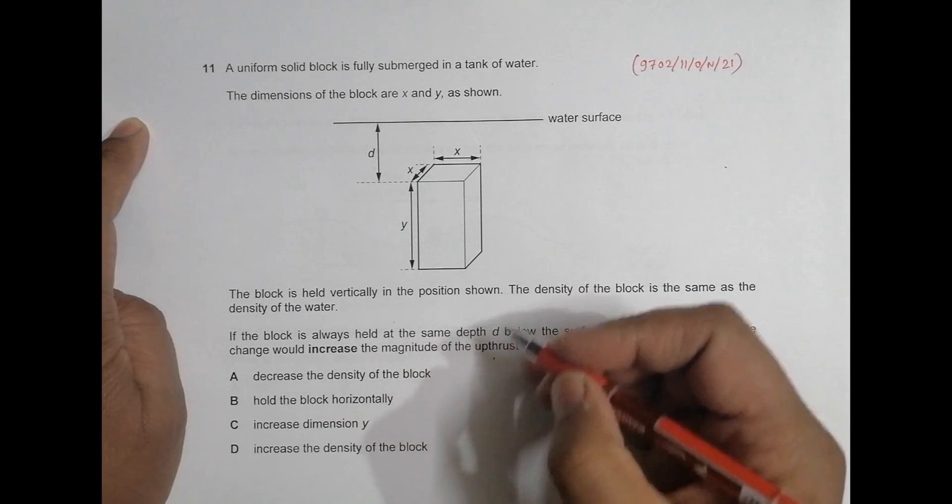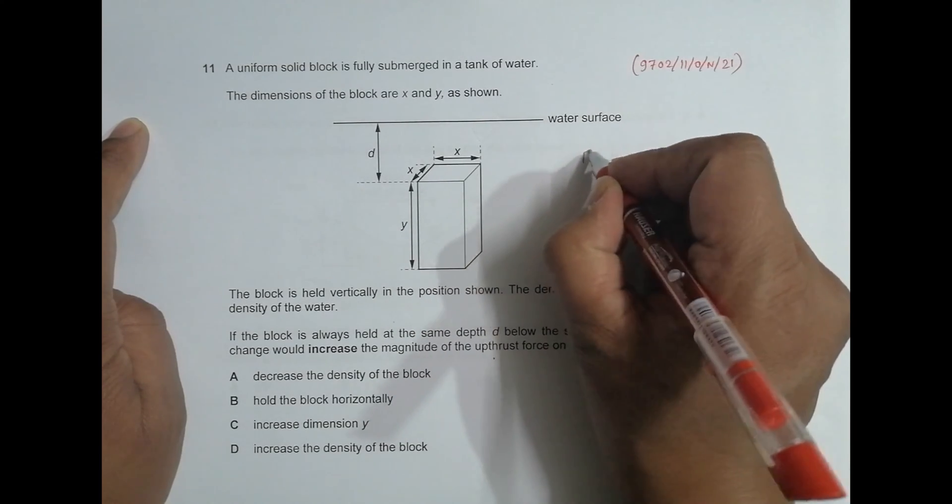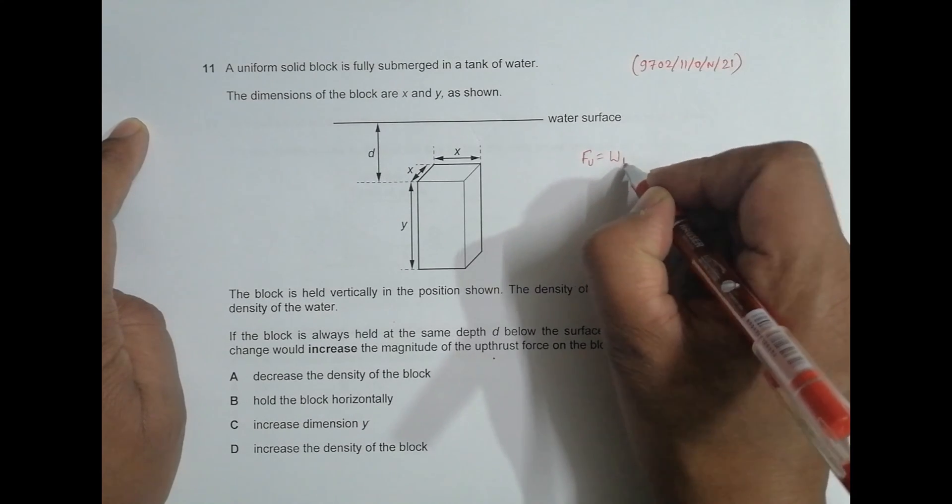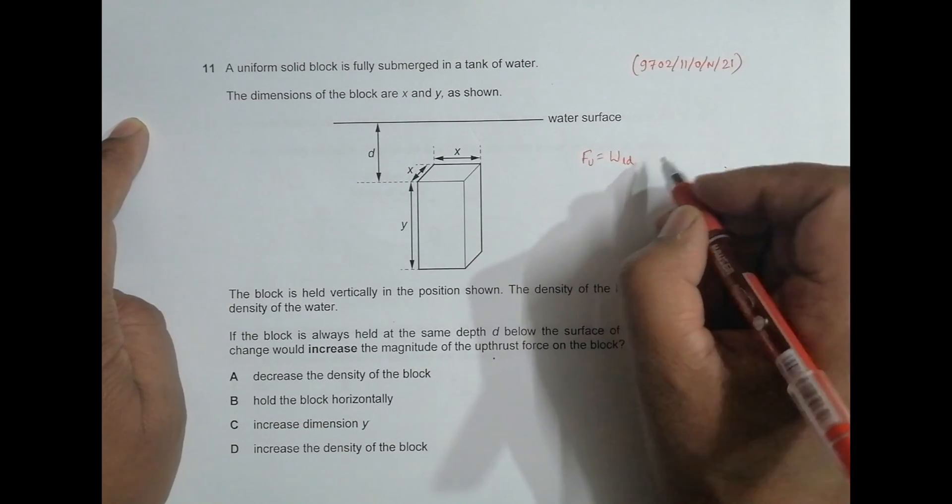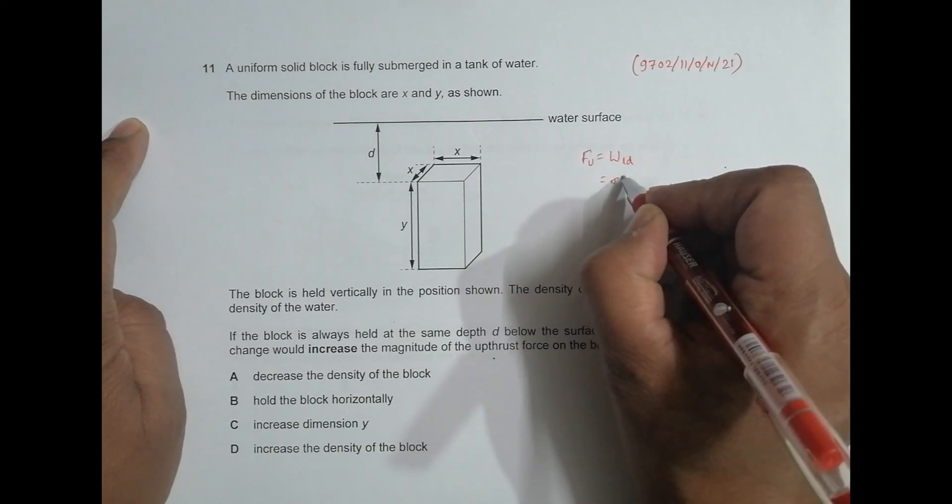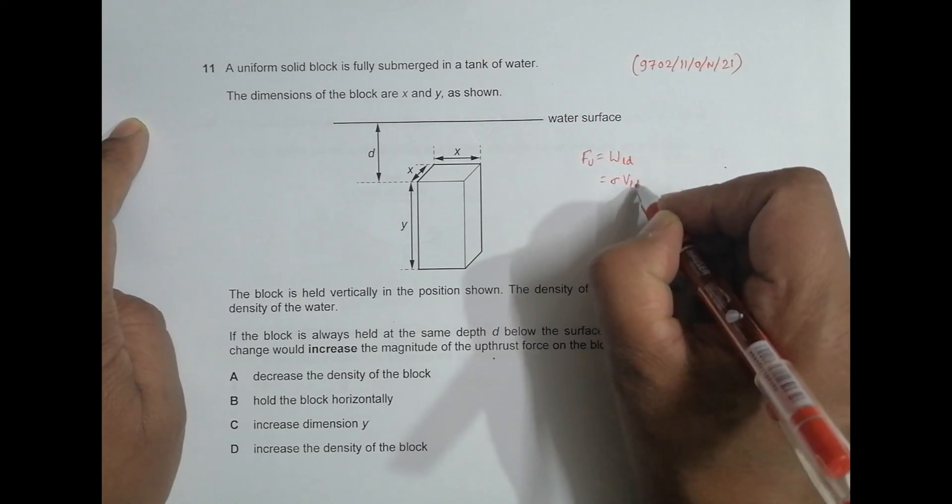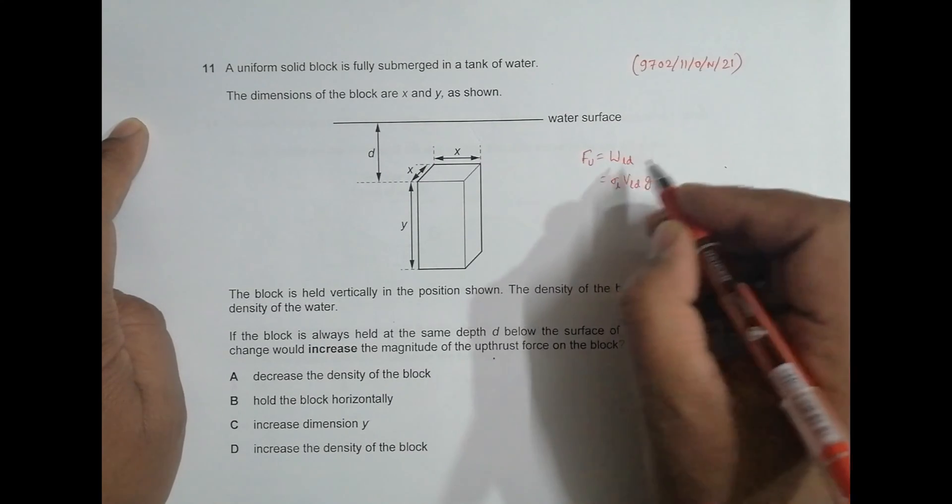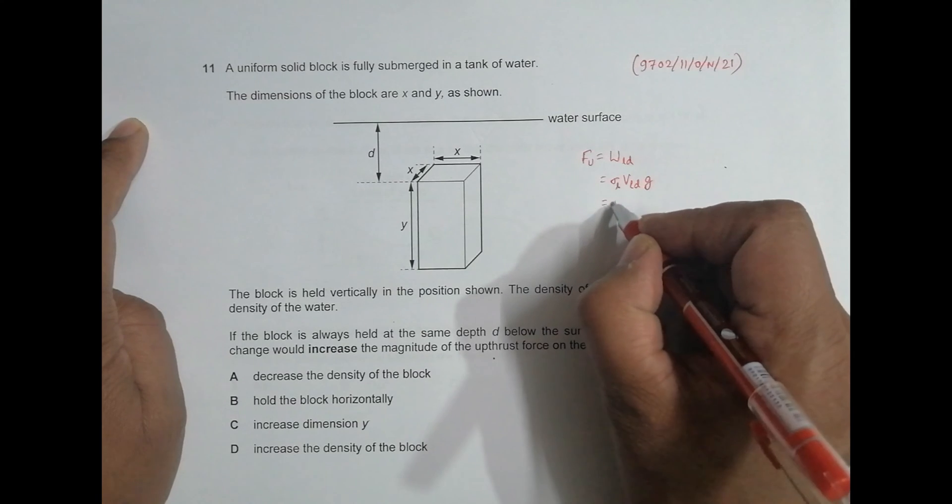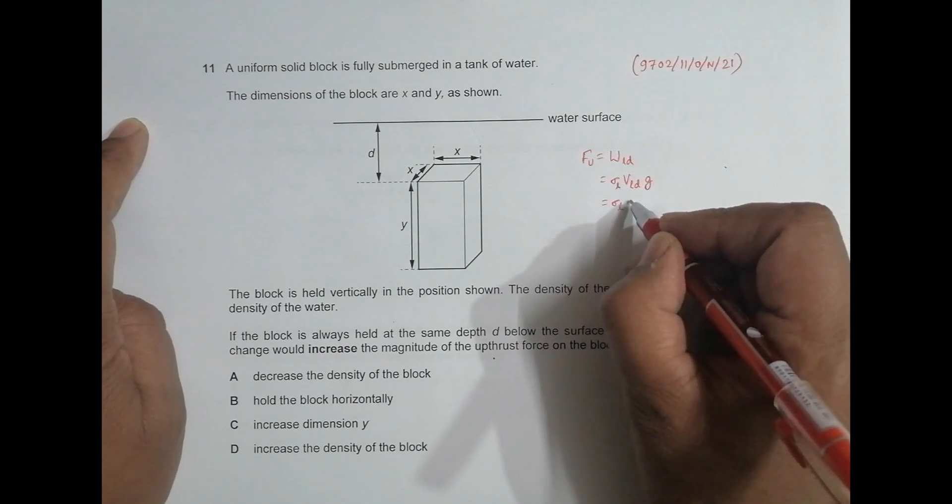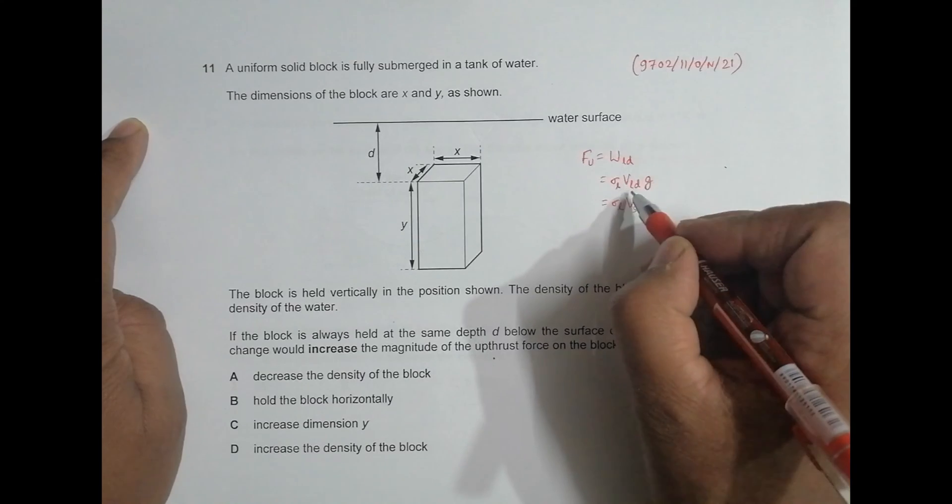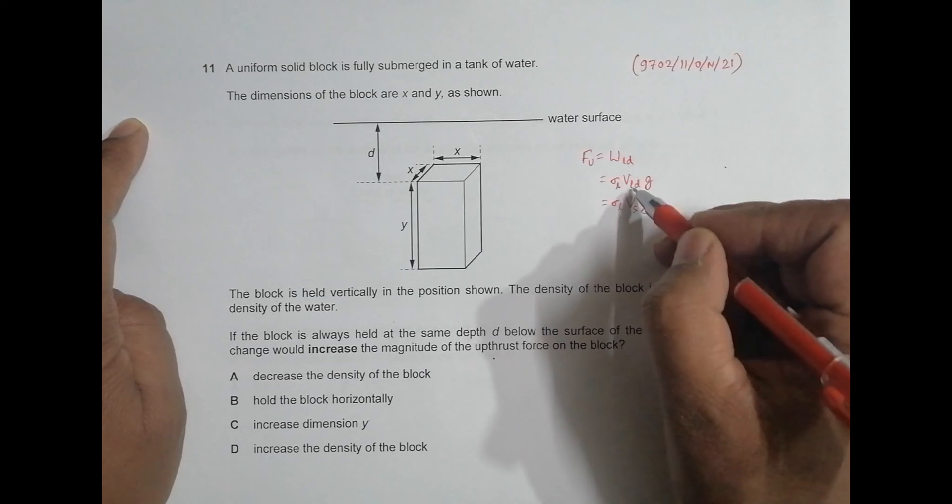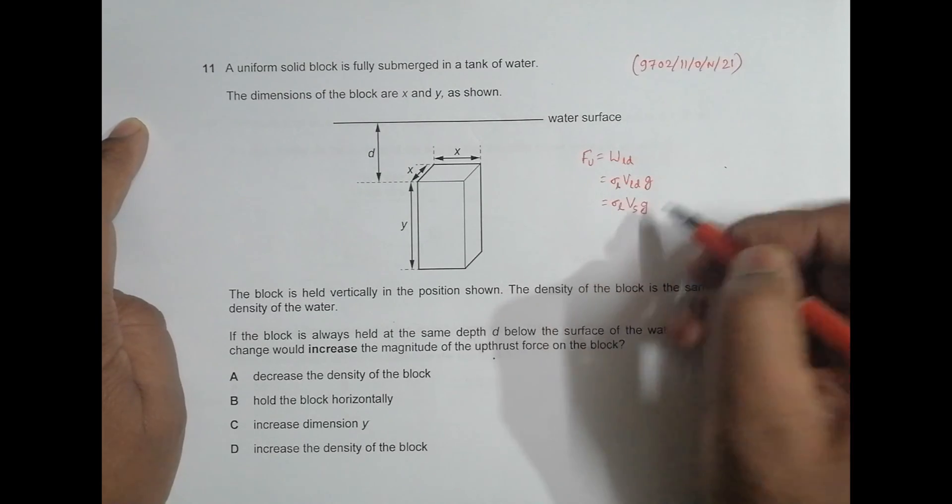First of all, we have to know that the value of upthrust is given by weight of liquid displaced, which ultimately becomes equal to sigma into V of liquid displaced into g. Sigma is also of the liquid, and VLD means V of the solid itself into g. So since it is fully submerged, the volume of liquid displaced should be equal to the volume of solid.